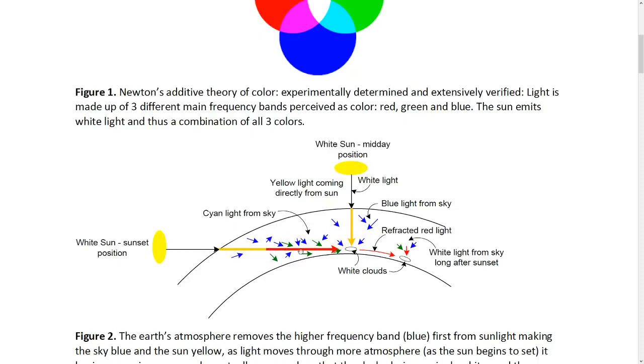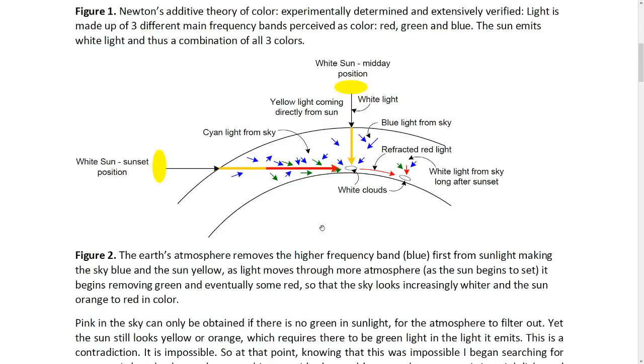And when it goes through more atmosphere, more of the light is filtered out. So the atmosphere starts filtering out or scattering green, the green frequency of light as well. It filters out all the blue. So there is no blue left in the light coming directly from the sun. And it starts filtering out green and eventually starts even filtering out some red. So the sun at that time looks very red, actually looks orange. And the sky looks more and more white. And this is what I understood, what my education taught me, that was supposed to happen.